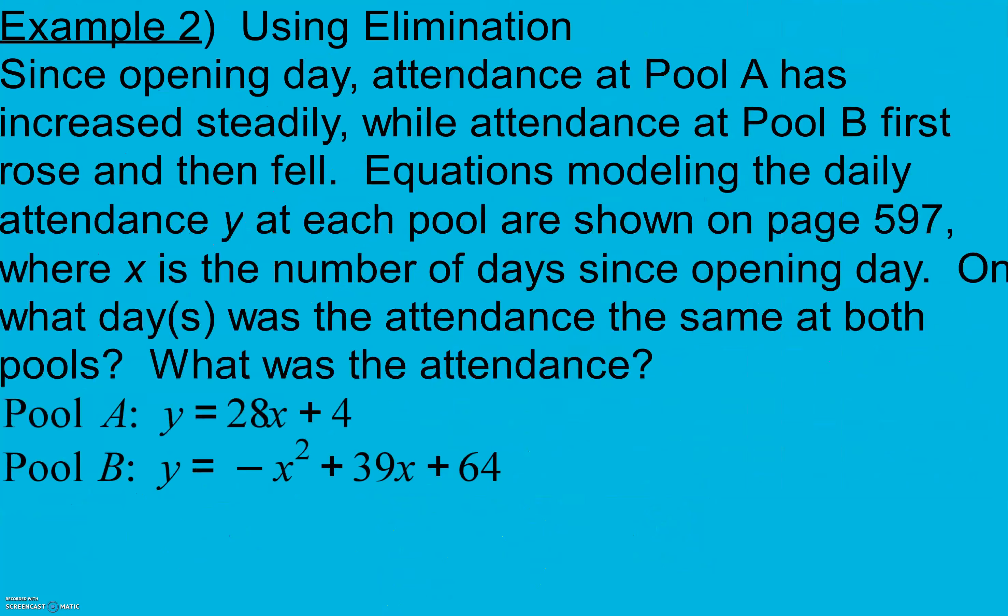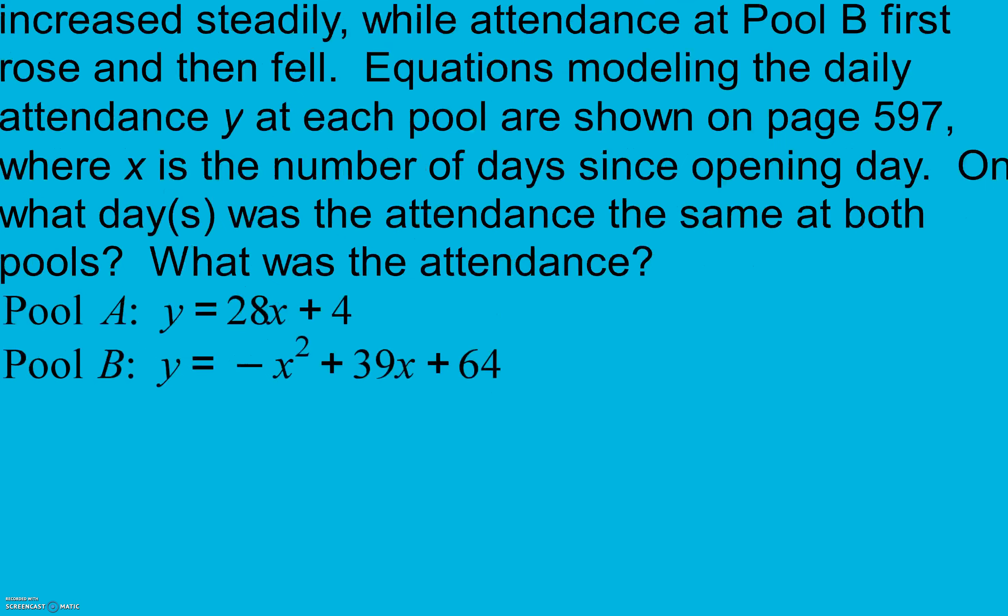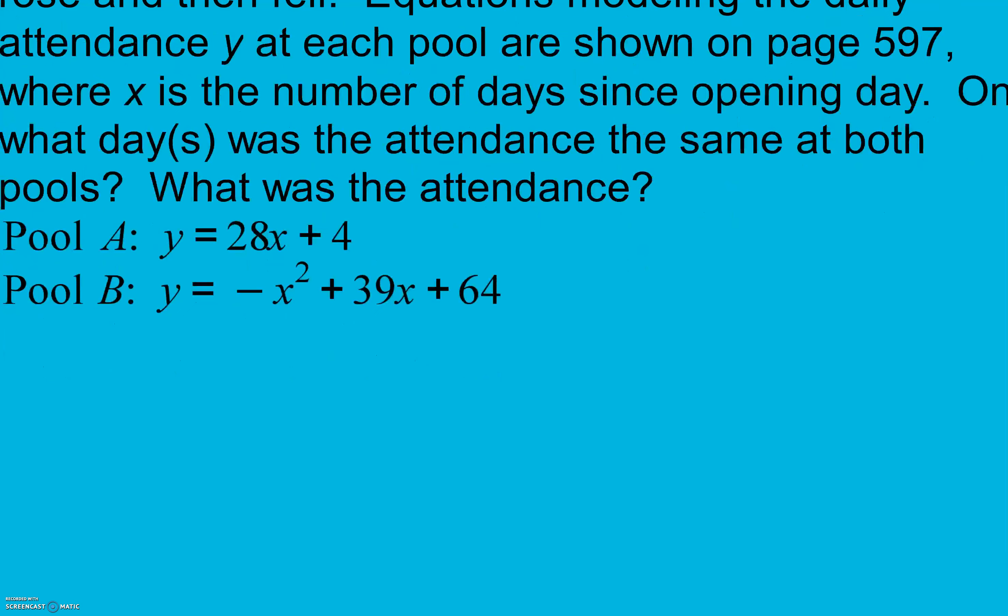In example 2, we're going to use elimination. Since opening day, attendance at pool A has increased steadily, while attendance at pool B first rose and then fell. Equations modeling the daily attendance Y at each pool are shown on page 597, where X is the number of days since opening day. On what day or days was the attendance the same at both pools? And then what was the attendance? So here are our equations. When we use elimination with systems where one of them is quadratic and one is linear, we have got to eliminate the Y's. I can't eliminate X's because if I get rid of my X and my X, I still have the X squared term. I can't get rid of my X's completely, but I can get rid of my Y's. And remember, when we use elimination, we need to start off by getting opposites. Here, I don't have opposites, but I can get some if I multiply my entire top equation by negative 1.